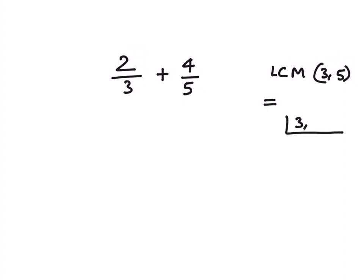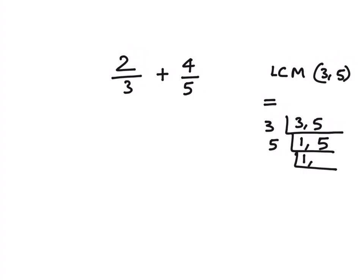We'll write 3 and 5 here and start dividing by the smallest prime number. We'll divide first by 3, so we'll get 1 here and copy 5 as it is because 5 is not divisible by 3. Next we'll divide by 5. Since we already have 1 here, we'll copy 1 and divide 5 by 5 to get 1. Now we have 1 at both places, so the LCM of 3 and 5 is 3 into 5, which is equal to 15.